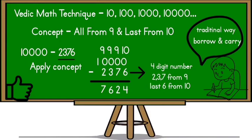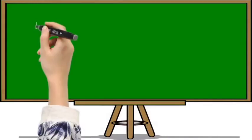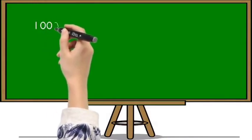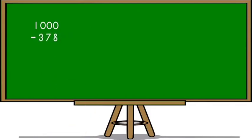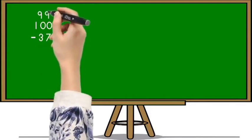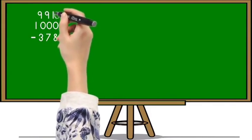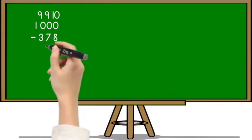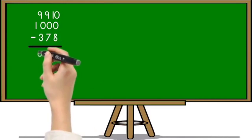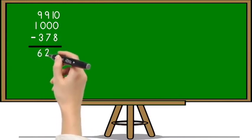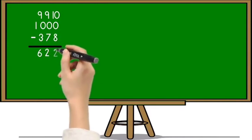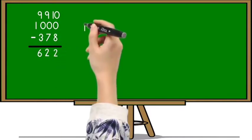So let's solve some more examples. Next example is 1000 minus 378. 378 is a three digit number. So according to the concept, first two digits 3 and 7 we subtract from 9 and the last digit 8 from 10. So 9 minus 3 is 6, 9 minus 7 is 2, and 10 minus 8 is 2. So the answer is 622.